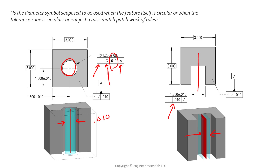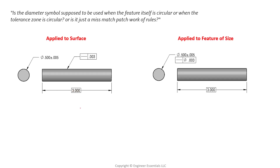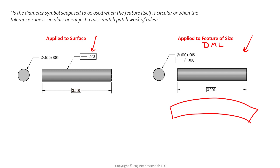So far we have the diameter symbol whenever our tolerance zone is clearly a cylindrical tolerance zone, where we're controlling the size of that diameter. Now one unique scenario is when we control the straightness of something. Straightness can be applied to either surfaces or features of size. When applied to a surface, we're controlling the straightness of one linear element of that surface, held between two parallel lines. Controlling straightness to a surface means no diameter symbol, because our tolerance zone is not diametric in nature.